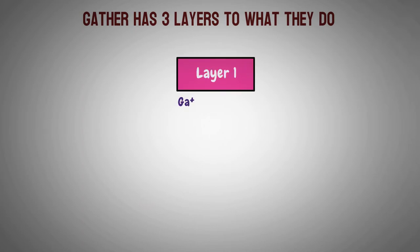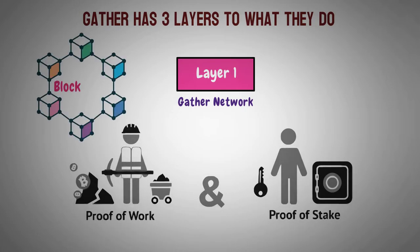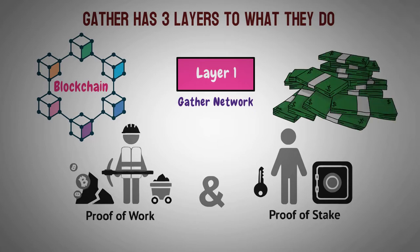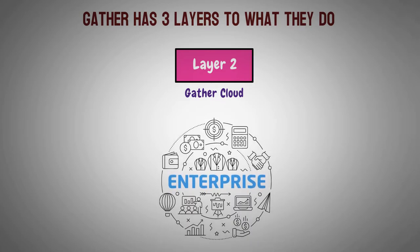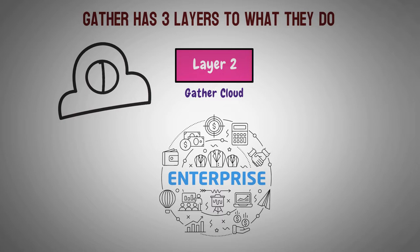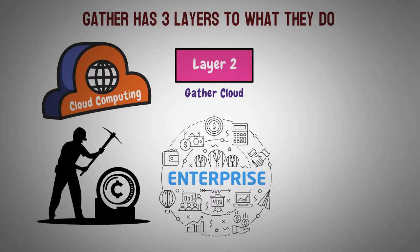Layer one is called Gather Network. Layer one is based on a hybrid of proof of work and proof of stake. If you take your gathered crypto that you've earned on the blockchain, you'll help maintain the security and transparency of the blockchain while making money. Layer two, the last layer, is called Gather Cloud. This layer helps provide processing power to big developers and enterprises. Some of your processing power will help mine for crypto, while some of it will help with cloud computing. Any extra processing power that isn't being used to mine for crypto can help these companies lower the cost of cloud computing.